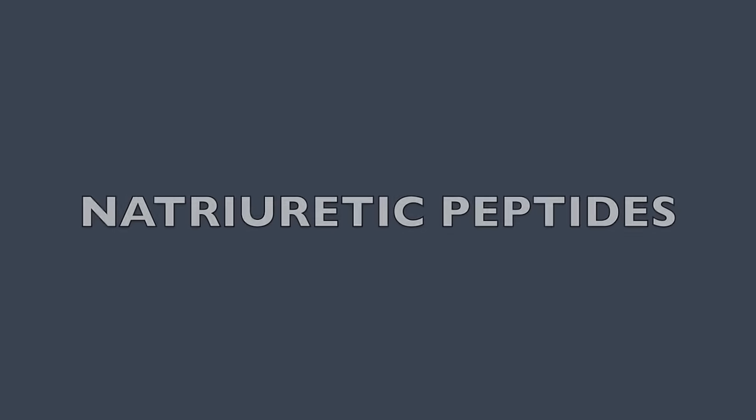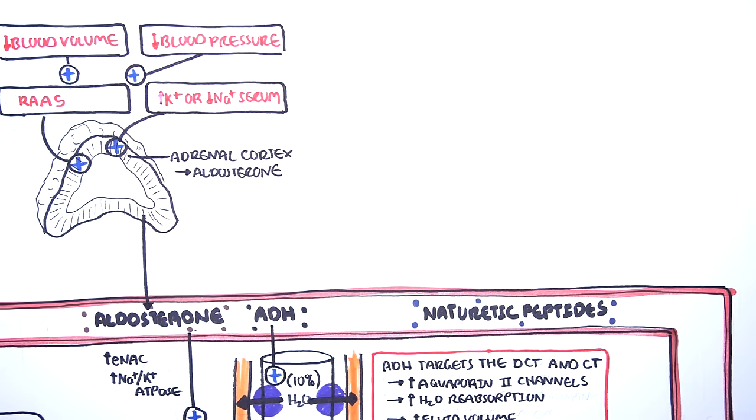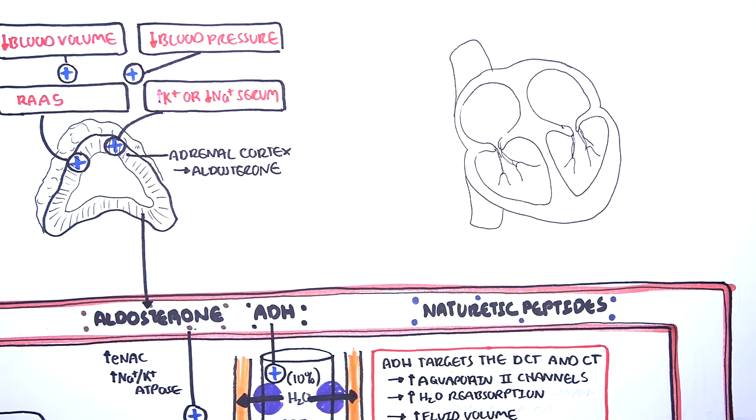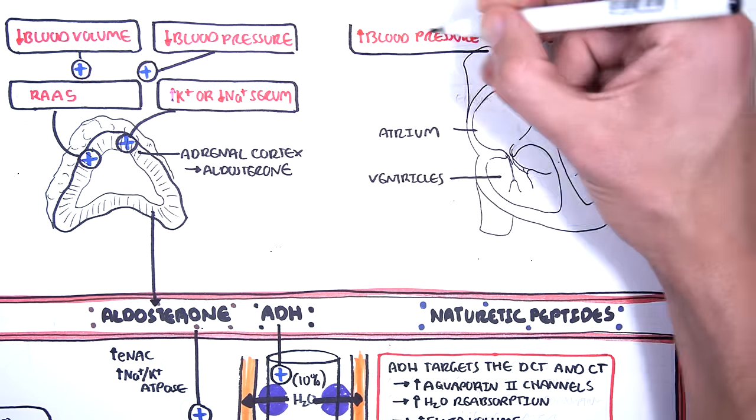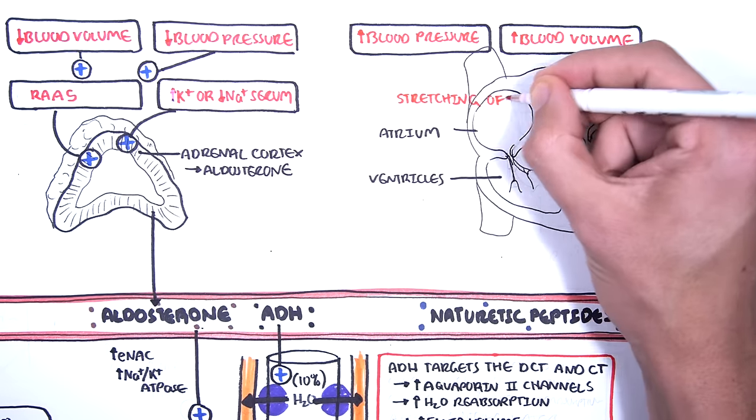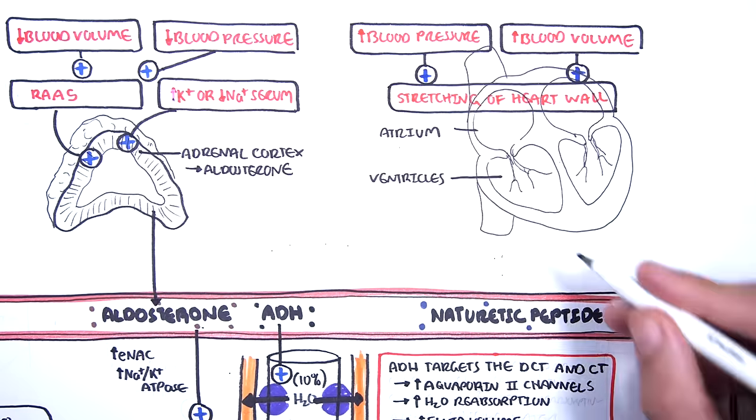The final hormone in maintaining blood volume and fluid homeostasis is the natriuretic peptides, which have the opposite effects of ADH and of aldosterone. The natriuretic peptides are released by the heart, specifically the atrium and the ventricle. Now, natriuretic peptides have opposite effects of ADH and aldosterone, and so the trigger of its release differs. High blood pressure and high blood volume will cause stretching of the heart wall, which will trigger the release of ANP and BNP.